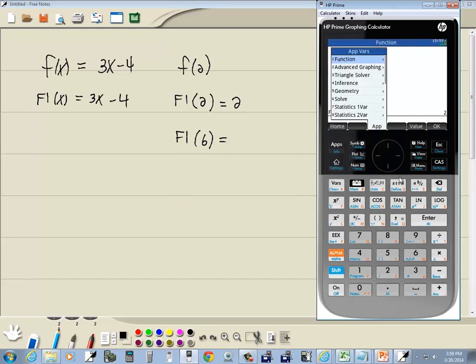We're under function, so I'll do a right arrow key. We want symbolic. I can down arrow to symbolic and right arrow, or see how there's a number in front of it? I can press the two. Now I want the f1, and there's a one in the upper left hand corner, so I'll press the one. Then do my parentheses, six, and press enter. That gives us 14.